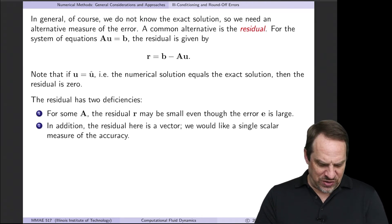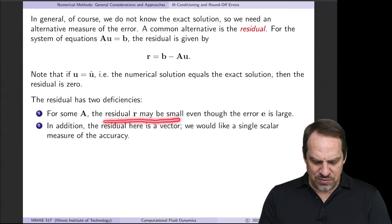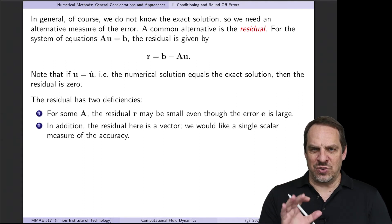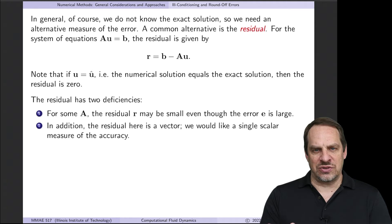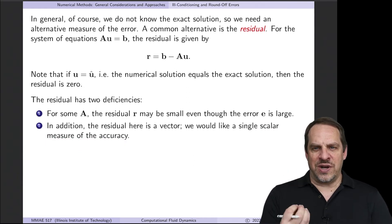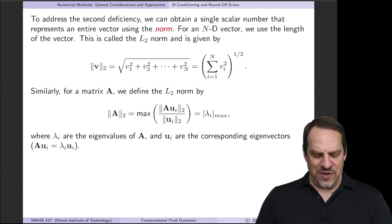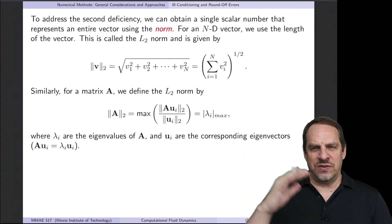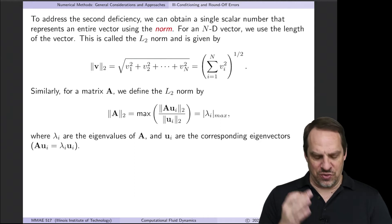But there are two deficiencies with the residual. The first is that for some A, the residual may be small even though the error e is large. Normally they go together, but there are cases where that's not true. The second issue is that the residual is a vector — b minus Au — so we'd like a single scalar measure of accuracy. We can do that simply by taking the norm of the residual vector. Using the L2 norm, that's the square root of the sum of the squares of the components — the geometric length of the vector — giving us just a single number.